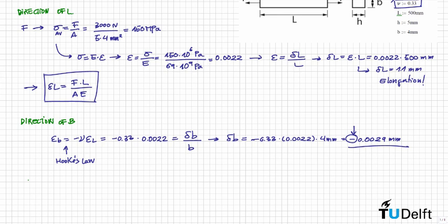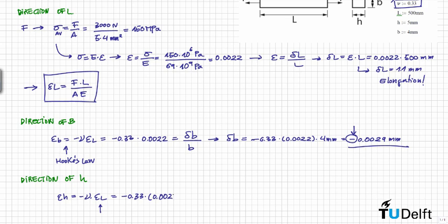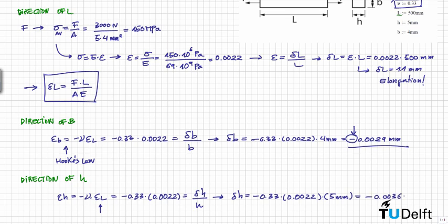The change in dimensions in the direction of H: the length H also contracts due to the Poisson effect. The strain in the H direction is equal to minus the Poisson ratio times the strain in the longitudinal direction — the direction in which we are applying forces. This is equal to minus 0.33 times 0.0022, and this equals delta H divided by H. So delta H is equal to minus 0.33 times 0.0022 times H, which is 5 millimeters. This equals minus 0.0036 millimeters — a contraction.